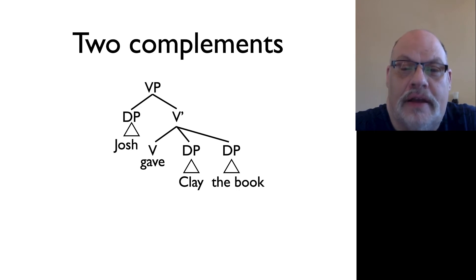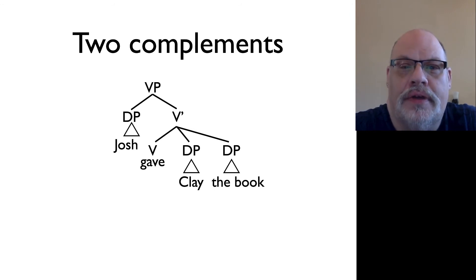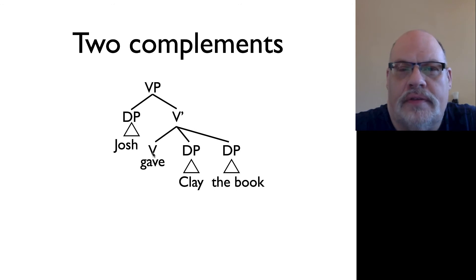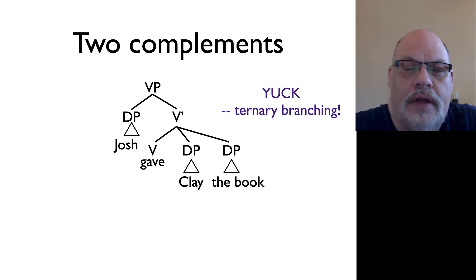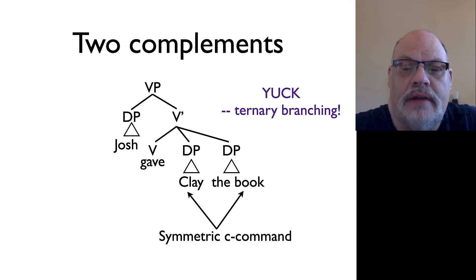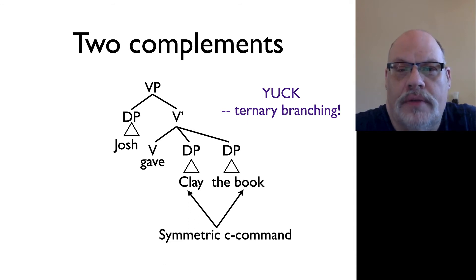One possibility is that X-bar theory is wrong, and we should just literally put them both in as complements — that is, both daughters of a bar and sisters to a head — which would require revising our X-bar rules. However, there are reasons to think this is not the right solution. First, it has ternary branching, which violates the binary branching principles we've used so far. The second problem has to do with the relationship between the two noun phrases.